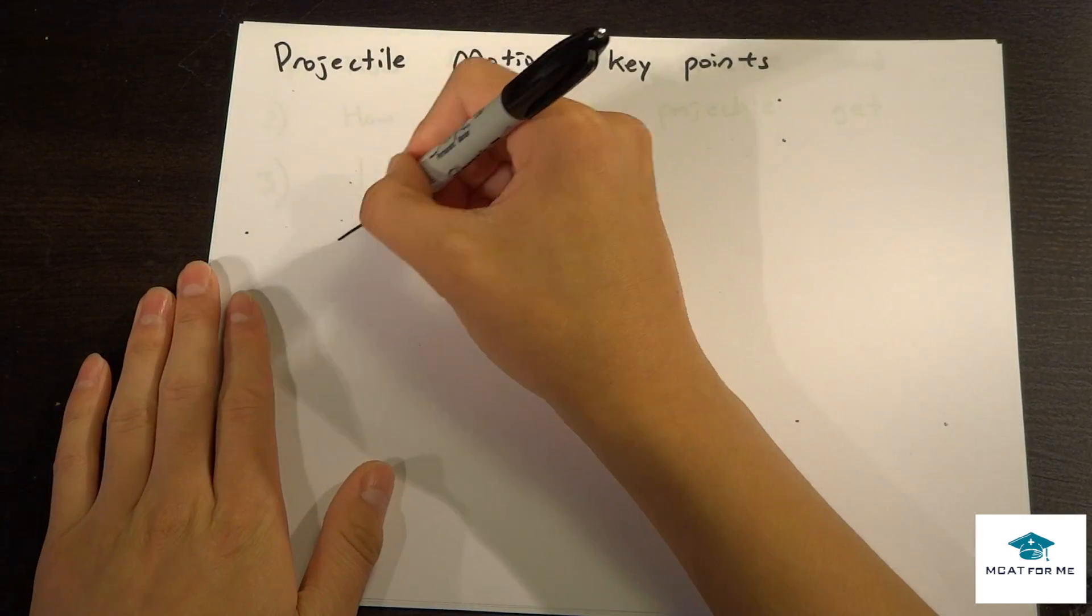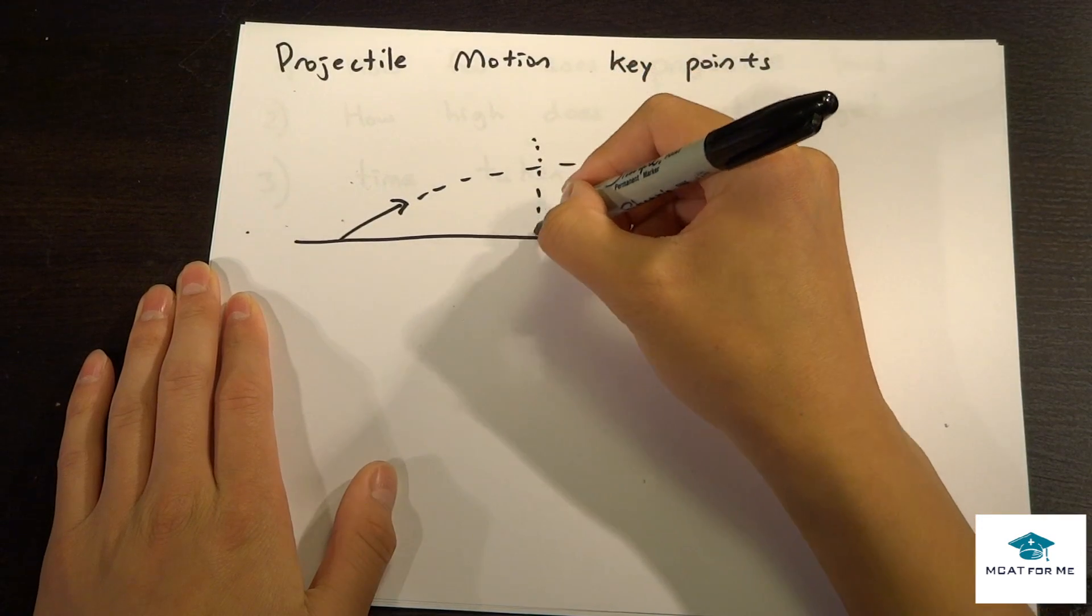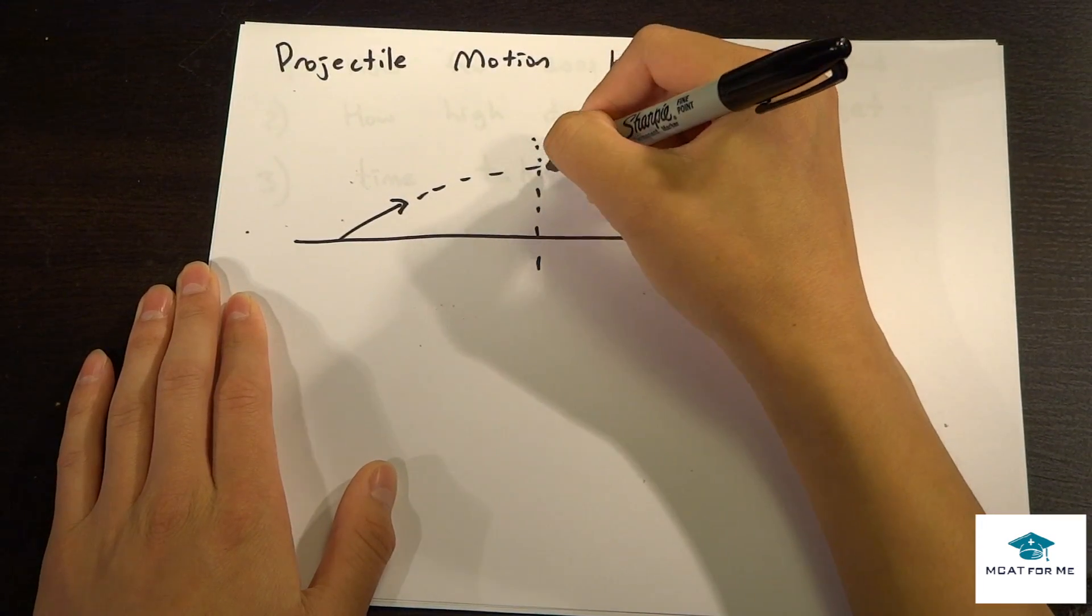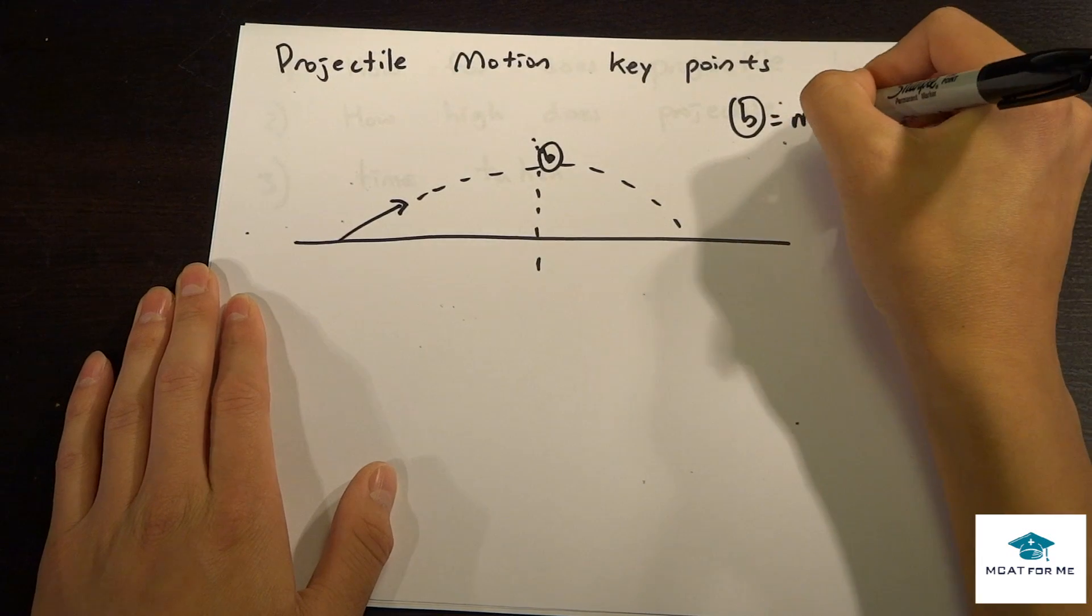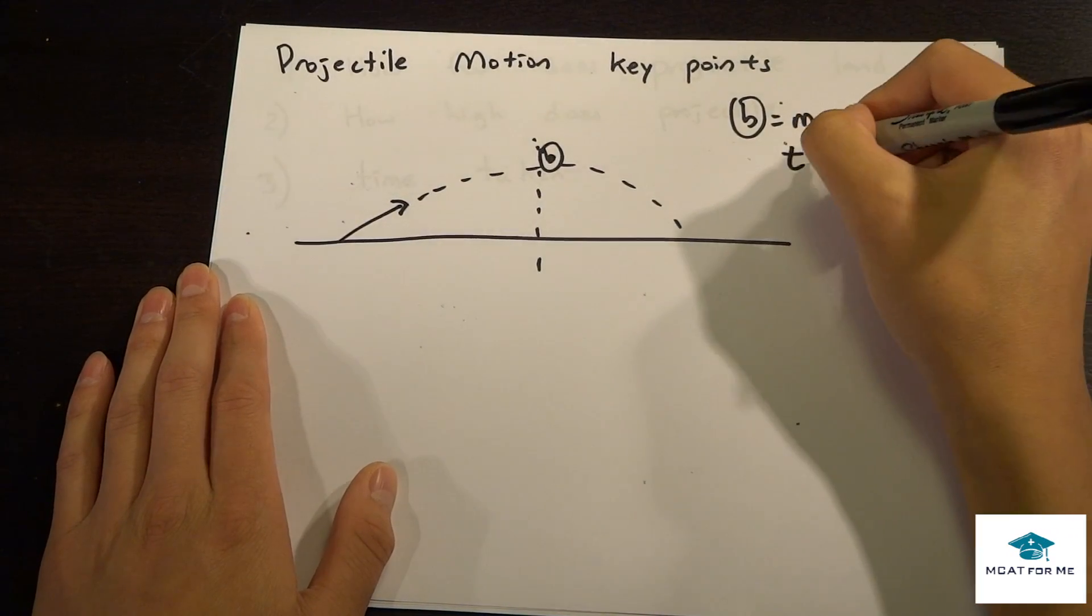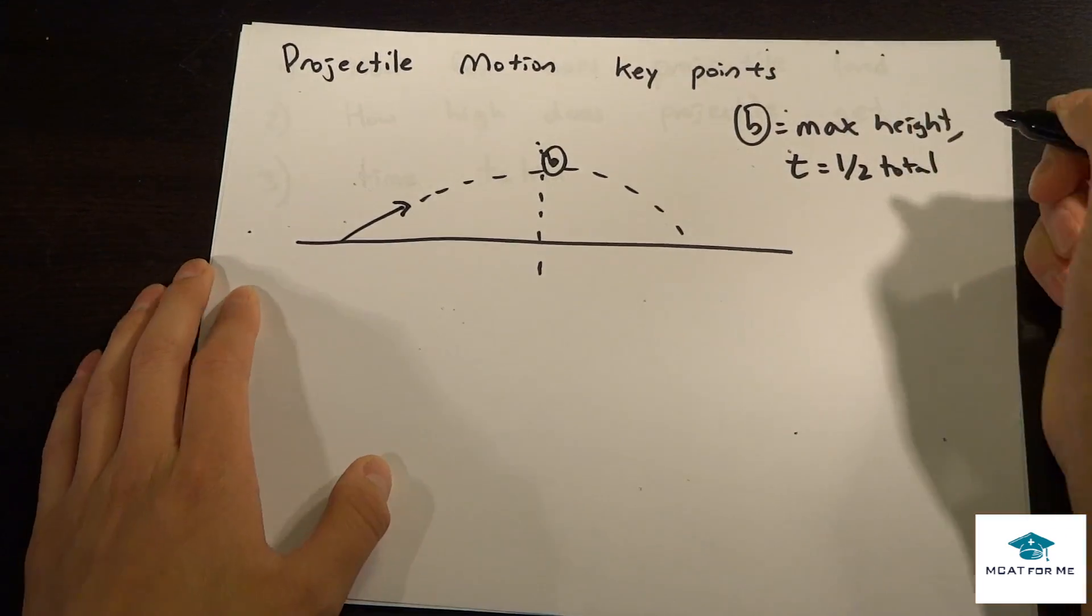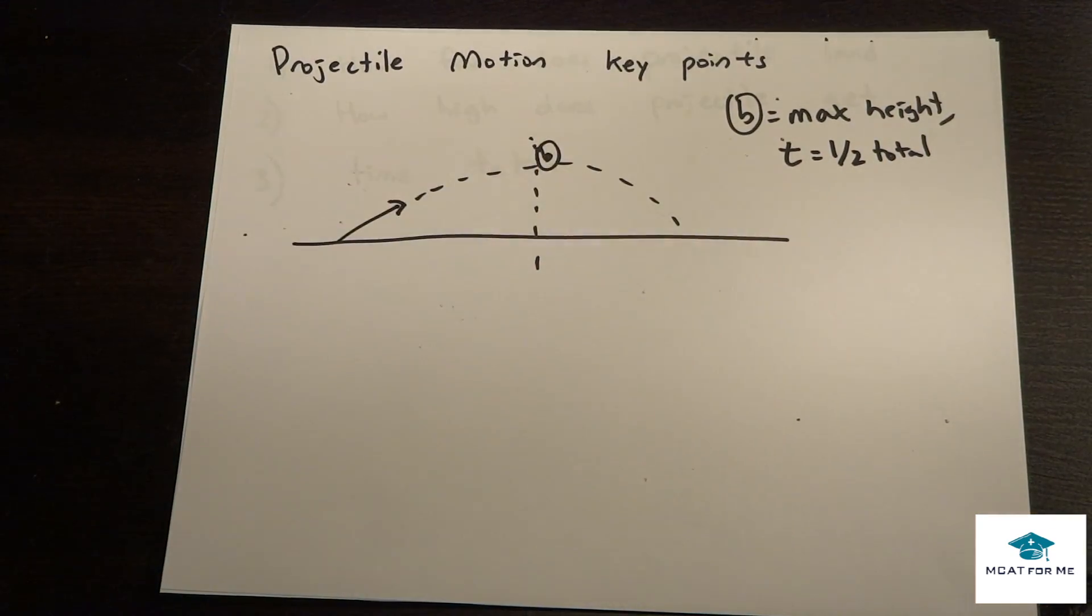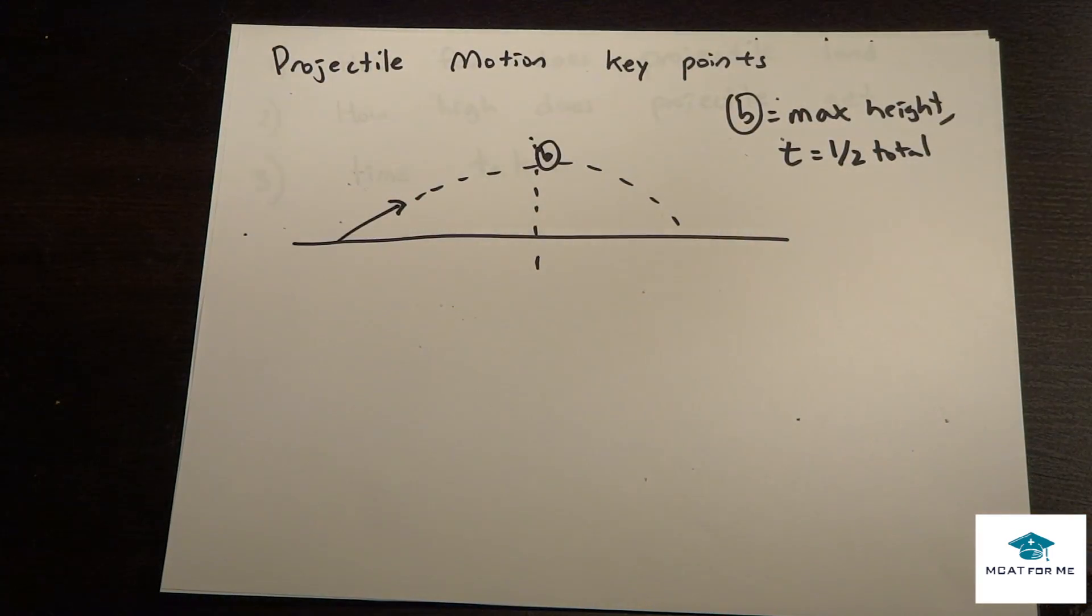At the max height, let's say point B, B is the max height. It's also when t equals one half of the total time. At this point at the max height, it has an equal amount on both sides, time equal on both sides.